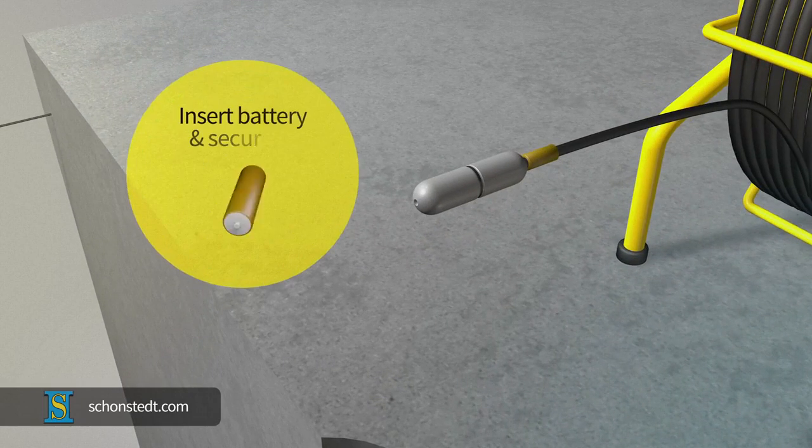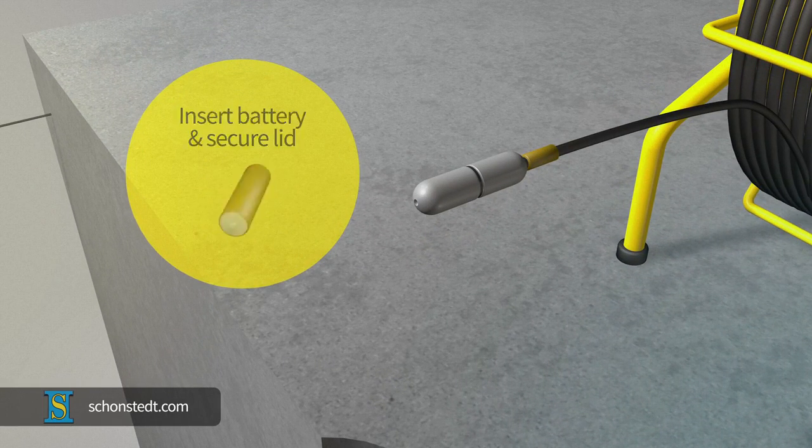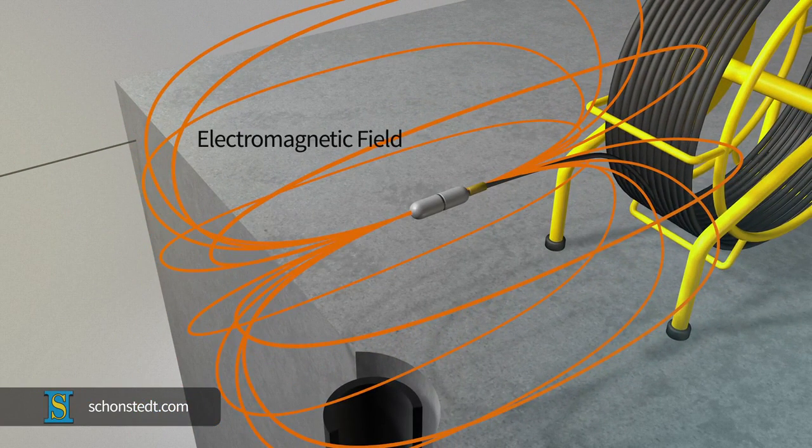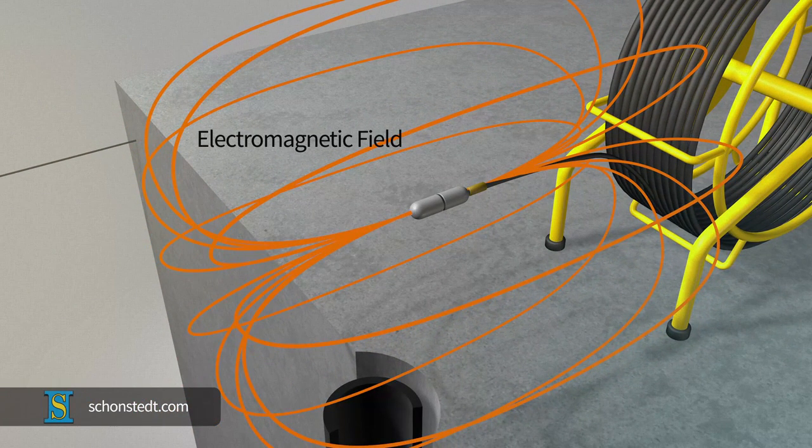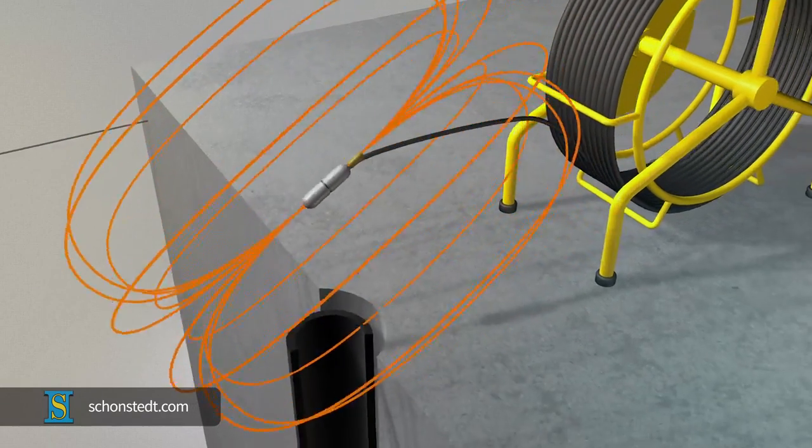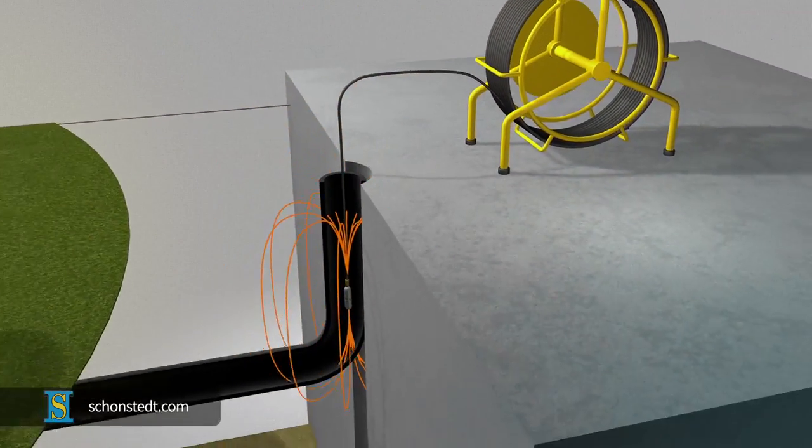Once the battery is inserted with the proper polarity and the lid is tight, the transmitter begins emitting an electromagnetic field of a certain standard frequency that the receiver can detect. The field expands in all directions and once the sonde is inserted inside a PVC pipe and pushed along,